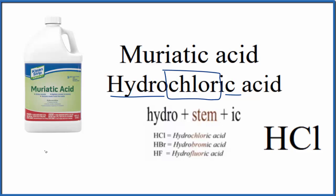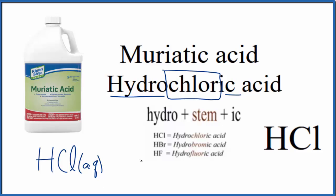Note that when we write HCl, we need to put (aq) after it if it's liquid, meaning it's dissolved in water. If we had hydrogen chloride gas, that would be HCl as a gas, and we call that hydrogen chloride gas. But here, muriatic acid is HCl aqueous.